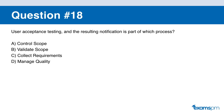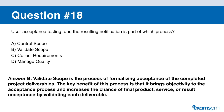Question number eighteen. User acceptance testing and the resulting notification is part of which process? A: control scope. B: validate scope. C: collect requirements. D: manage quality. If you said B, you are correct. The validate scope process is the process of formalizing acceptance of the completed project deliverables. The key benefit is that it brings objectivity to the acceptance process.